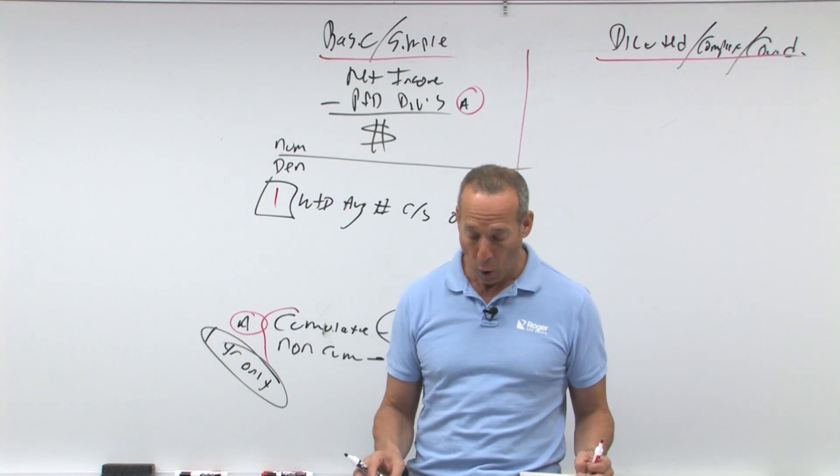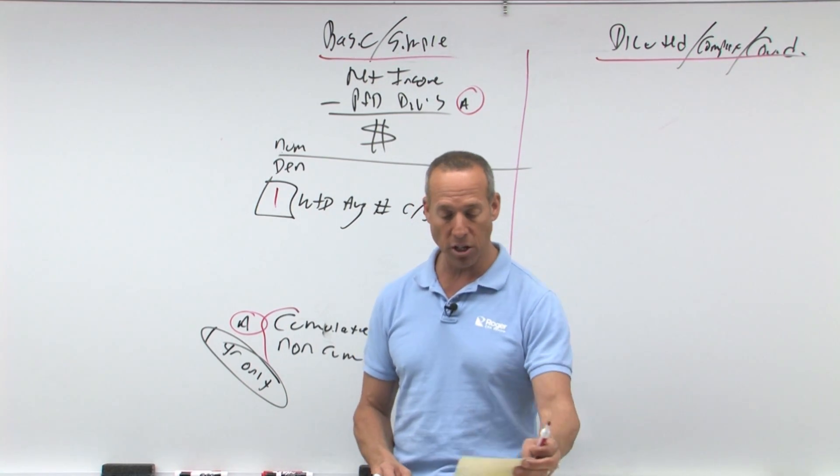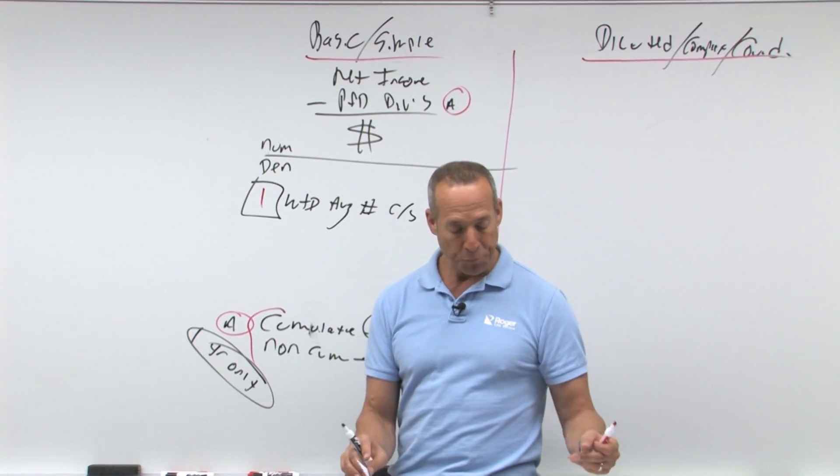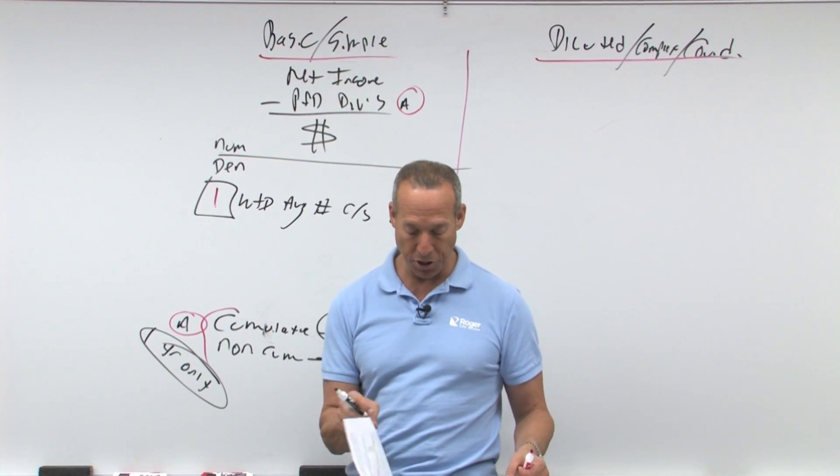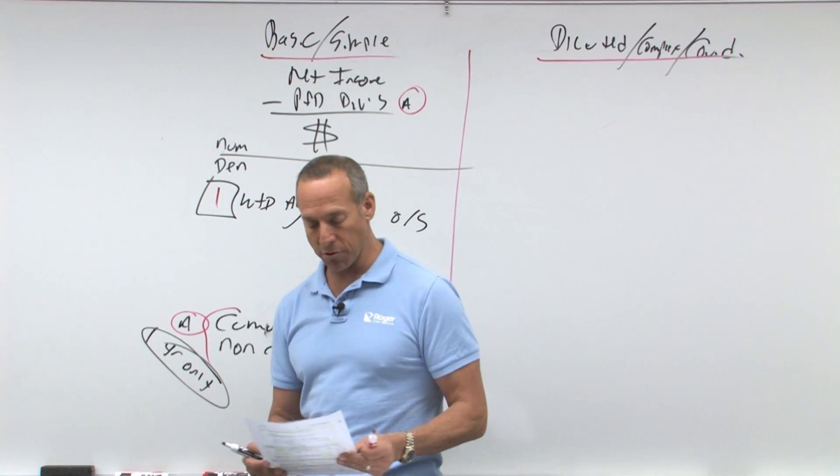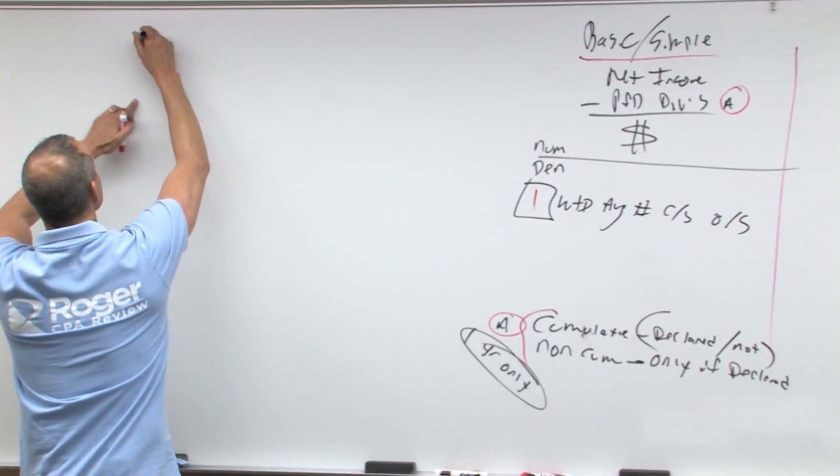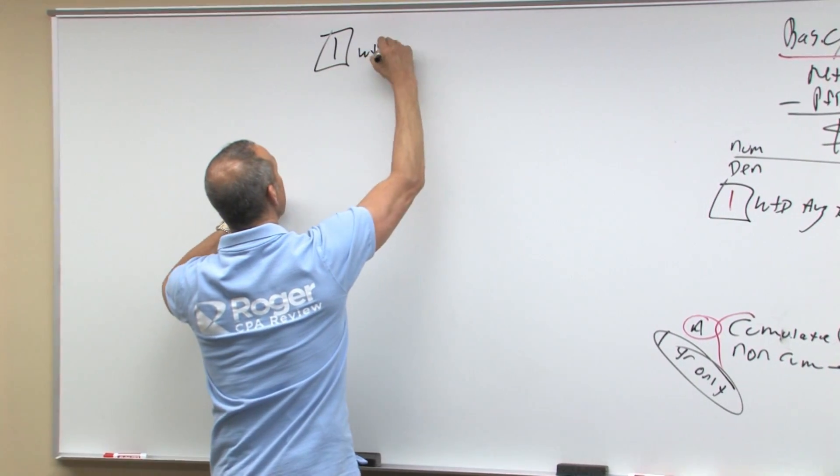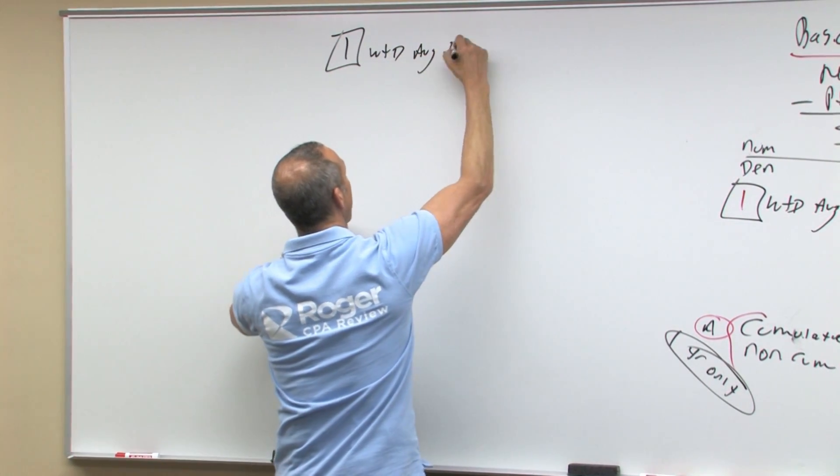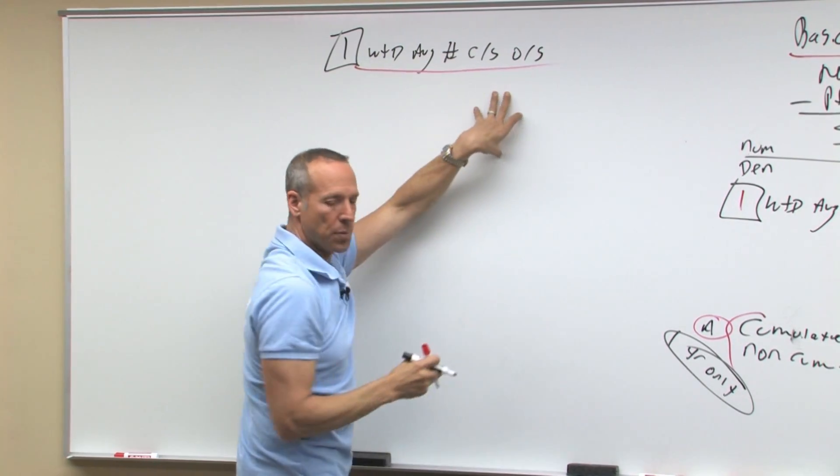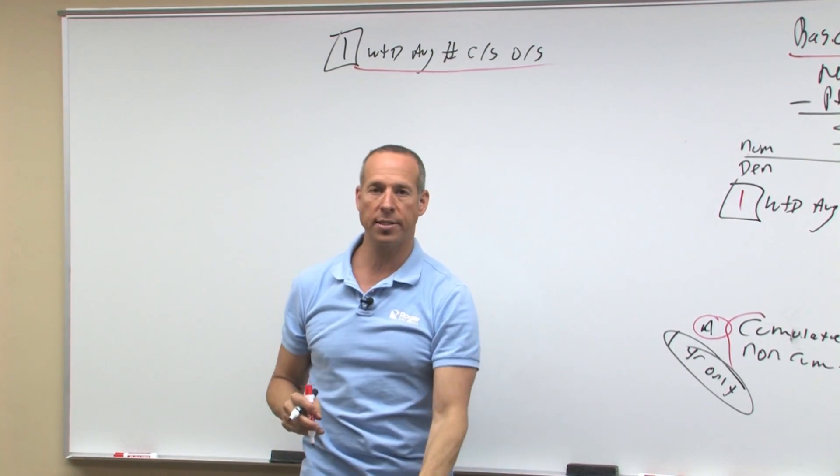This is the thing called weighted average number of shares outstanding. So what I want to do is talk about what does weighted average number of shares outstanding mean? You'll see that there is an example in your notes. I'm going to put here a weighted average number common stock outstanding.